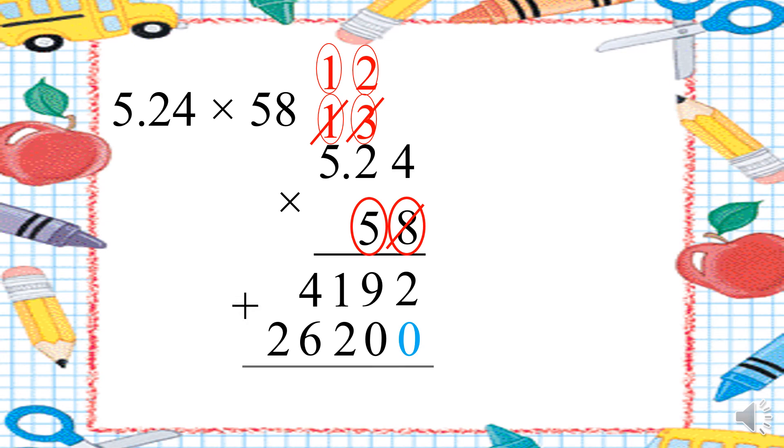And now we have to add the 2 answers. 2 plus 0. 2. 9 plus 0. 9. 1 plus 2. 3. 4 plus 6. 10. 0 down and 1 up. 1 plus 2. 3. That's it. I have finished. No.